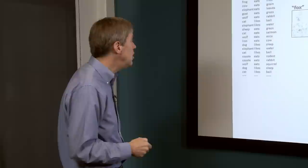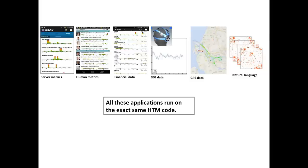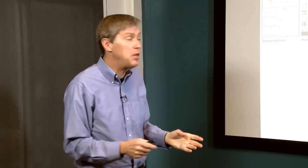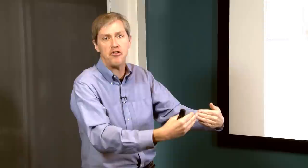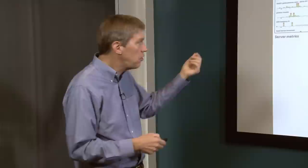All six of these applications were built using the exact same code base — not similar, not a reconfiguration, not a recompilation. We literally took data from these different sources, fed them through an encoder, converted to SDRs, and fed them into the exact same HTM model. In each case it learned different things and produced useful results. This really demonstrates the universal nature of cortical algorithms. There is no other machine learning technology that can do this — but brains and nature figured it out.